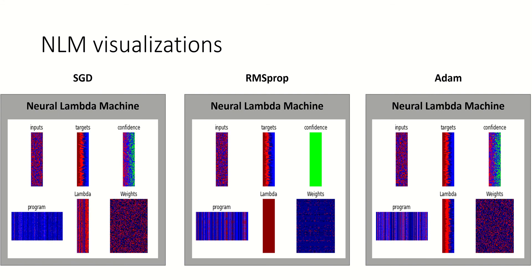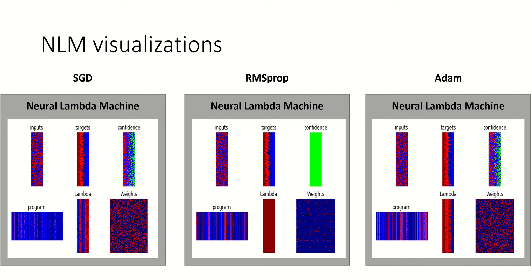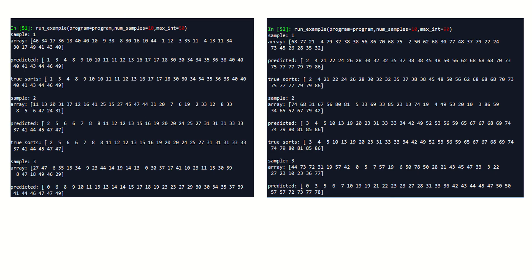The SGD and Adam NLMs are both not learning in a really optimal way. I tried tweaking the learning rates of the training procedure, but they didn't seem to learn quite as well as RMS prop.